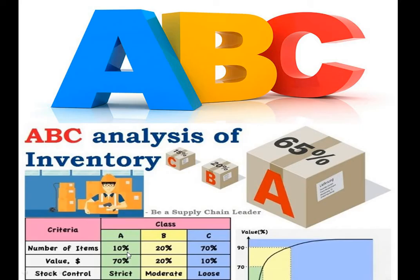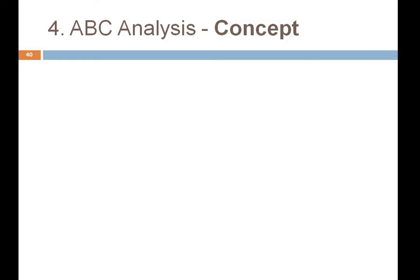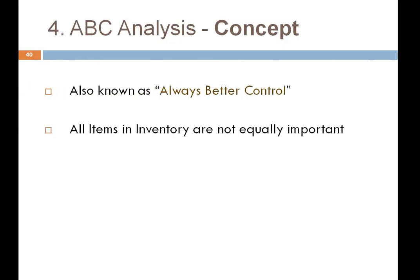ABC analysis is also known as Always Better Control. The base of this model says that all items in inventory are not equally important. For example, a firm may have item A, item B, item C, item D, and any number of items — but every item is not equally important in terms of price and consumption value. These are the two key variables.